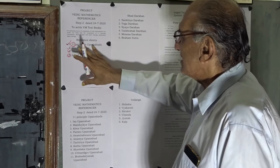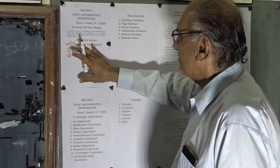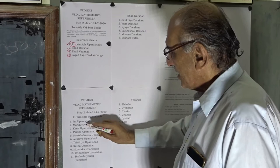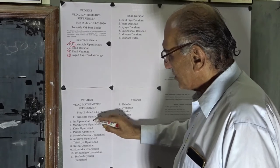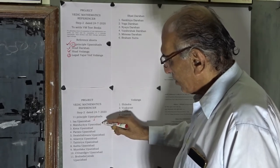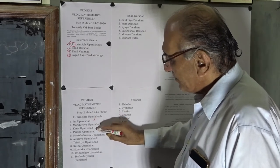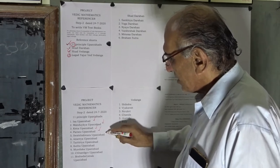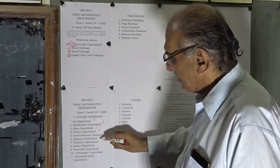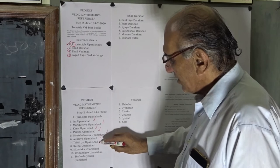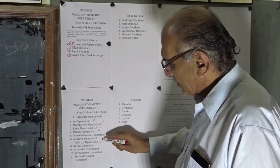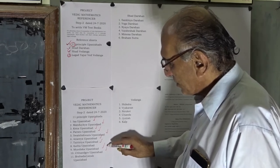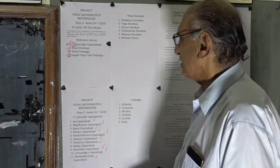The eleven principal Upanishads are: Isha Upanishad, Mandukya Upanishad, Kena Upanishad, Parsuna Upanishad, Sapteshwara Upanishad, Aetriya Upanishad, Tethriya Upanishad, Munduko Upanishad, Chhanduko Upanishad, and Bridharanik Upanishad.